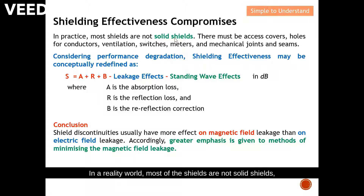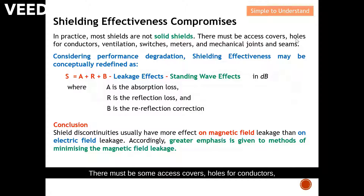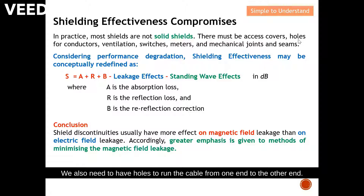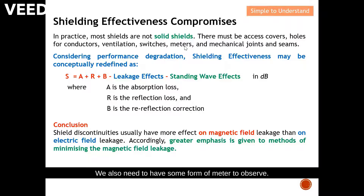In the real world, most shields are not solid and sealed, which means we cannot provide total shielding. There must be access covers, holes for conductors, ventilation, switches, meters, and mechanical joints and seams. We need holes for ventilation, to run cables from one end to the other, for on/off switches, meters for observation, and for mechanical joints and seams.